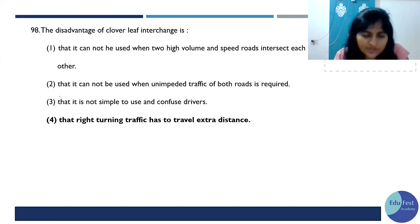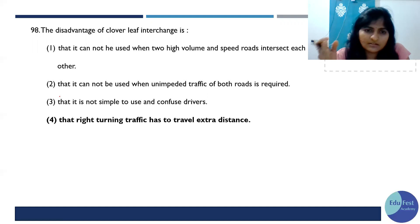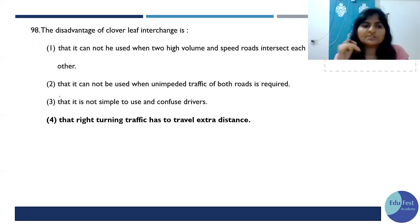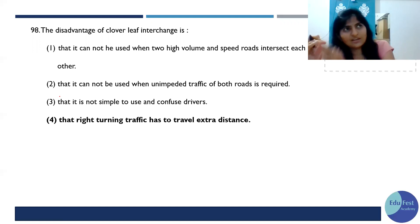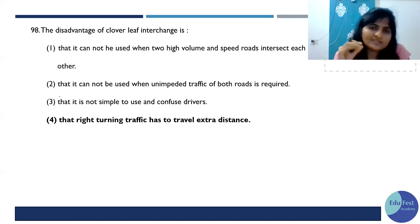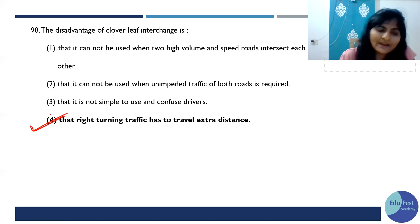The disadvantage of a power lift interchange: I suggest everyone use IRC codes for transportation questions — that is the best authentic source. In Indian driving, vehicles drive on the left side. So in a power lift interchange, left-turning traffic has extra travel distance. The IRC code covers signages, interchanges, and all such topics. Go by that code for transportation — it will make transportation easy. So the answer is 4.